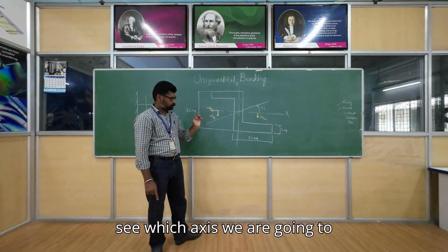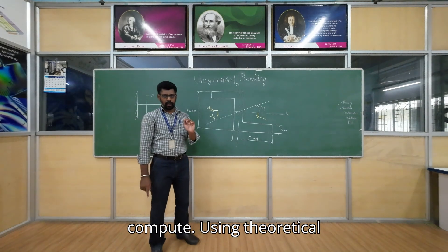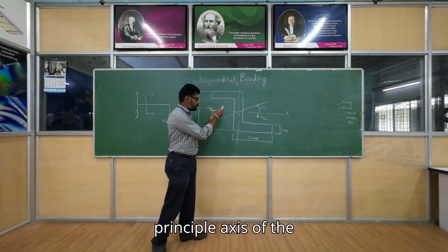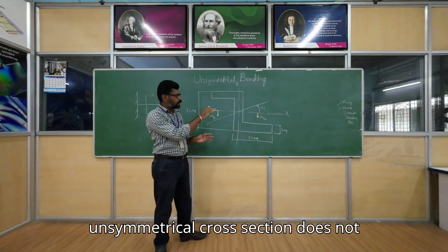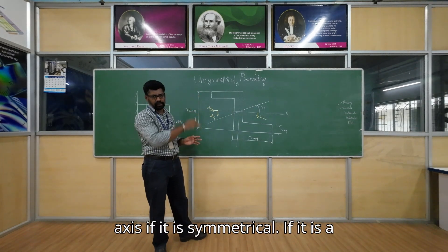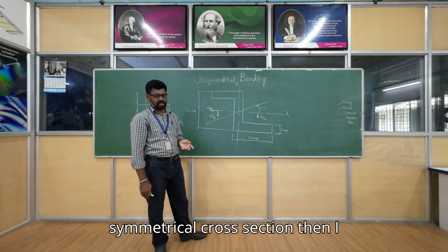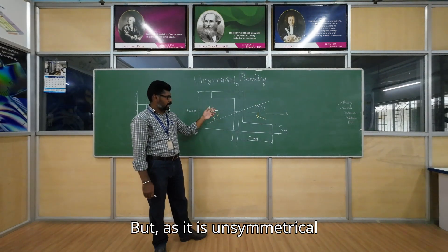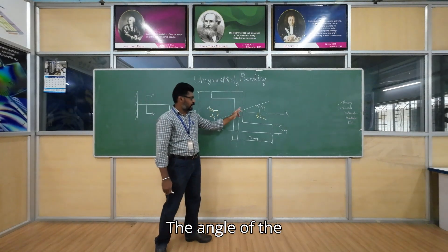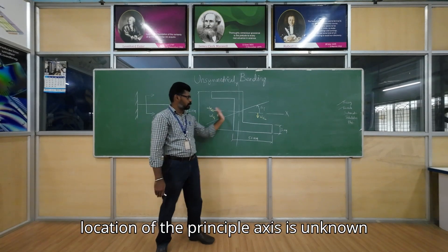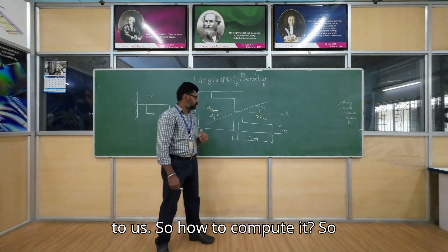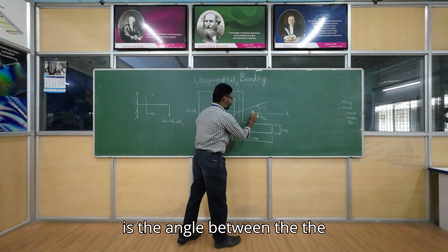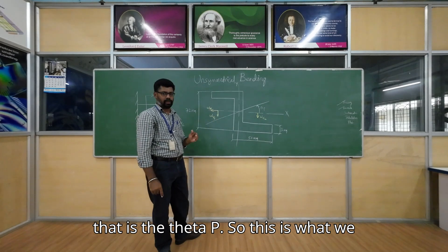Now let us see what the principal axis is and which axis we are going to compute. For an unsymmetrical cross section, the principal axis does not coincide with the X or Y axis. If it were a symmetrical cross section, the principal axis would coincide with the X or Y axis. Since it is unsymmetrical, it won't coincide, so the location of the principal axis is unknown and we need to compute theta p — the angle between the OX axis and the principal axis.